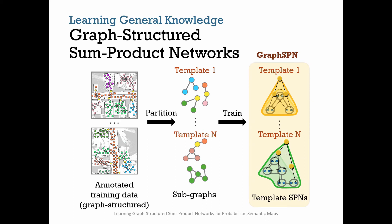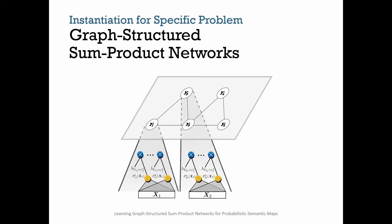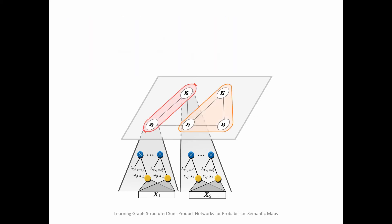With a trained model, we can now instantiate a Graph SPN for specific problem expressed as a graph. Starting with local SPNs modeling the dependency between local evidence x and latent variables y. We partition the graph into subgraphs and for each subgraph instantiate the appropriate template SPN. In this example, we will use template SPNs trained for two-node and three-node subgraphs. We can partition the graph in a different way and instantiate the same template SPNs.